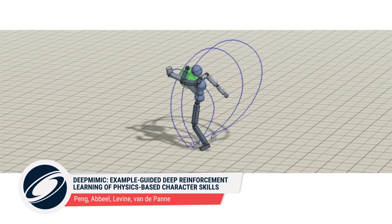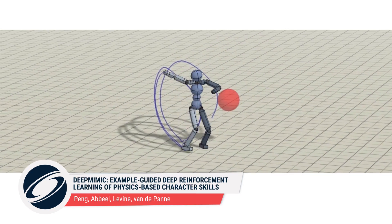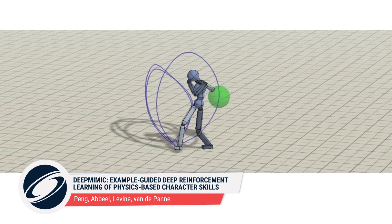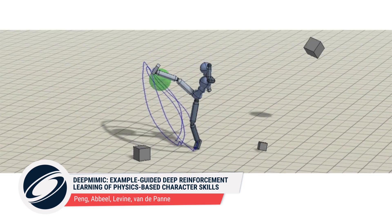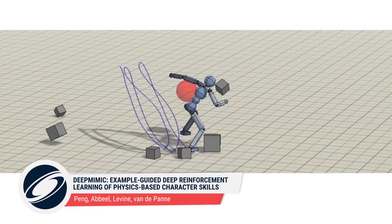With a deep reinforcement learning strategy, this figure learns how to repeatedly kick through the red sphere, and can even recover when bombarded by blocks.